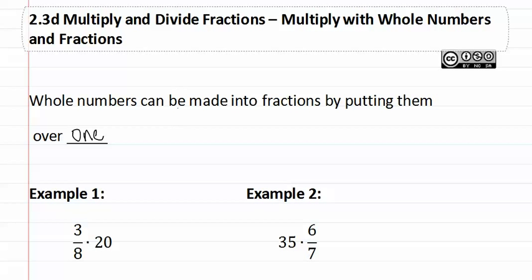If we have a number such as fifteen, we can always place it over one because this bar means division and fifteen divided by one is fifteen. So we have not changed the number by placing it over one.